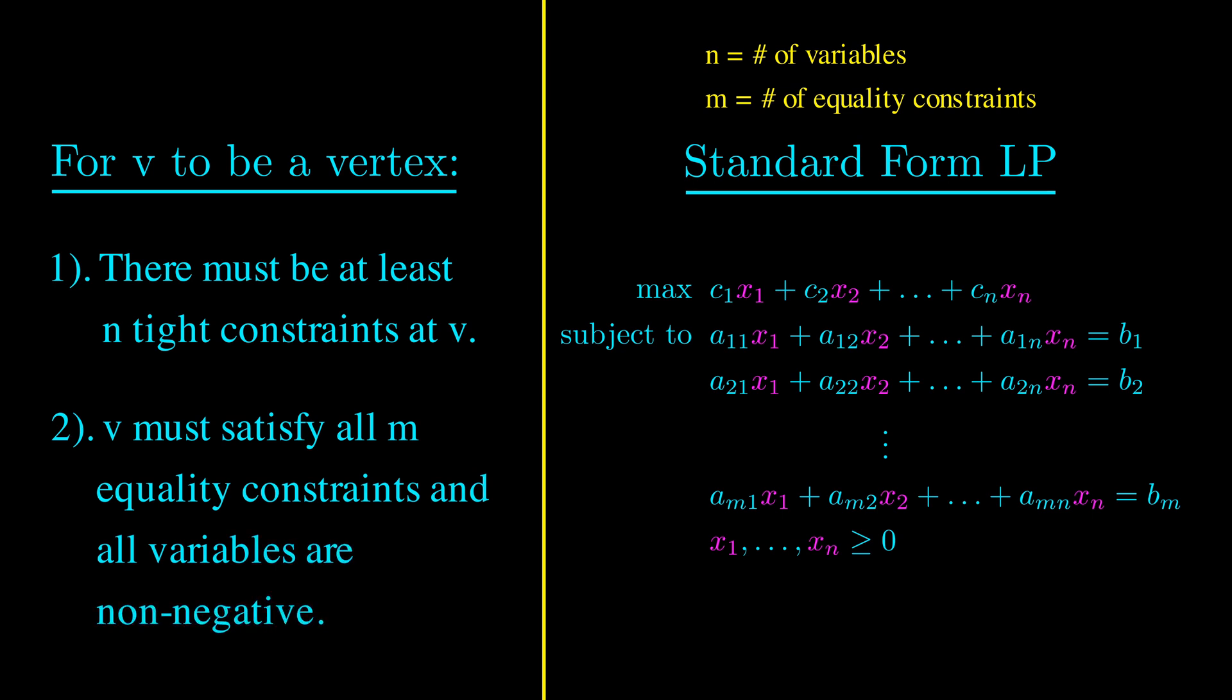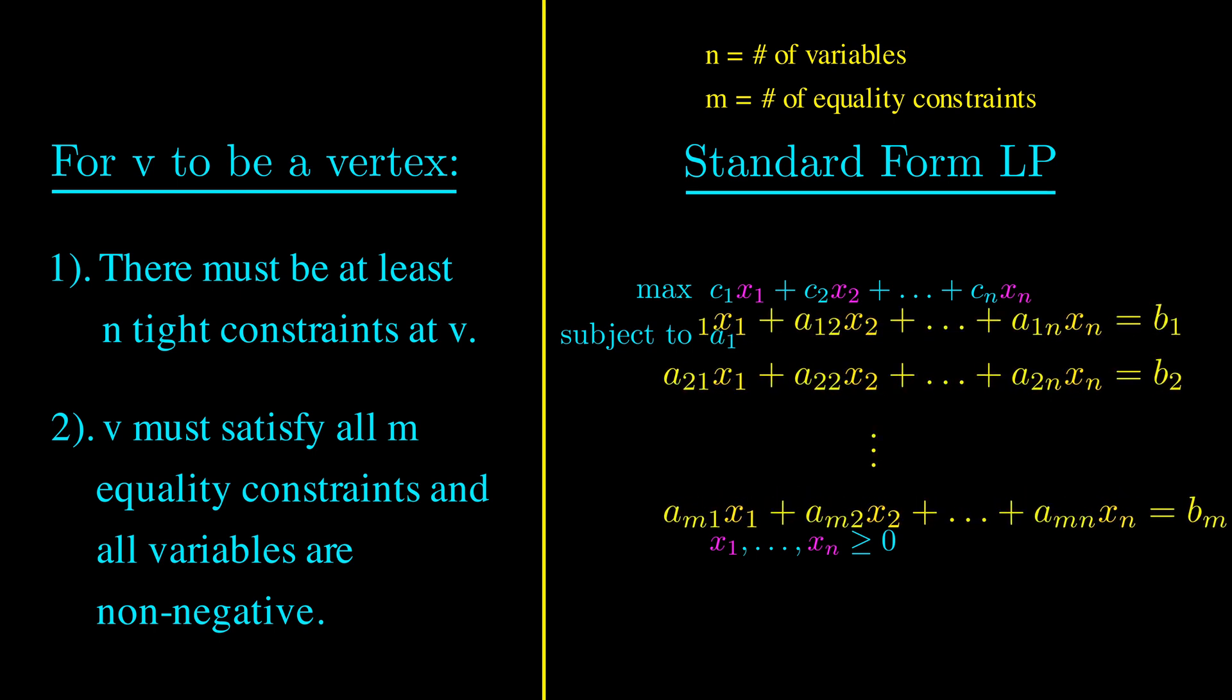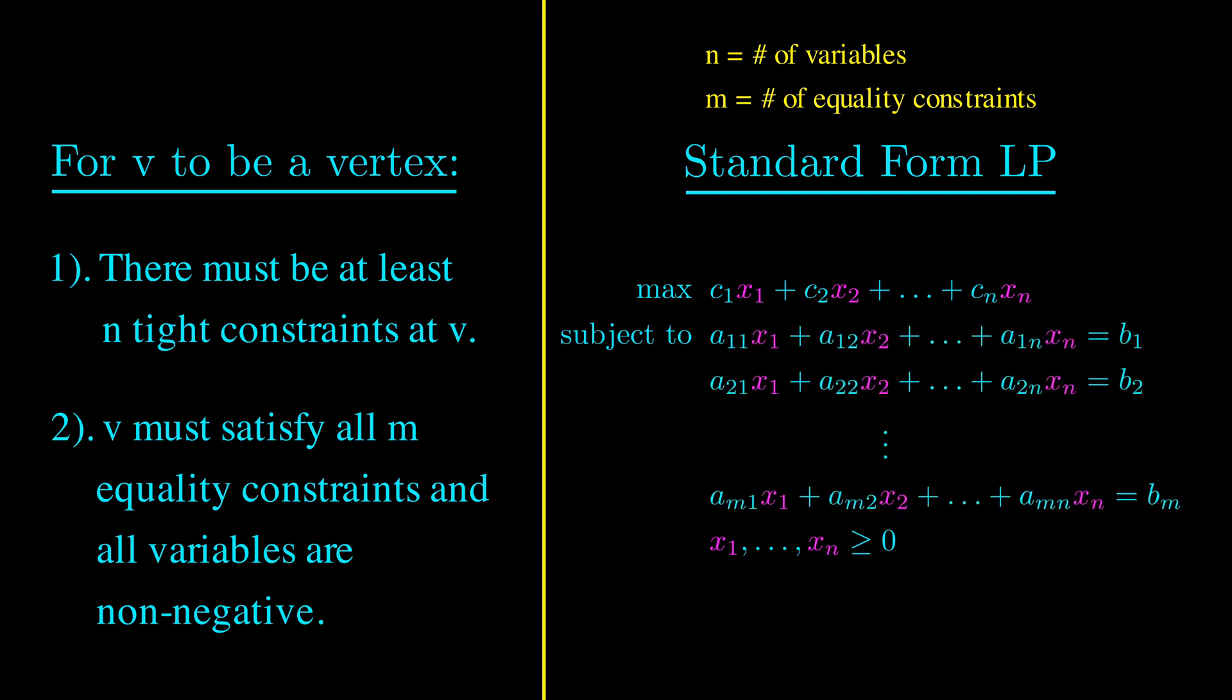The first condition, that a vertex needs to have at least n tight constraints at v, can also be simplified. Notice that for standard form linear programs, all feasible points have to satisfy these m equality constraints.